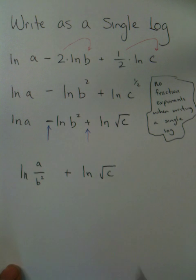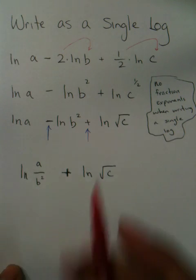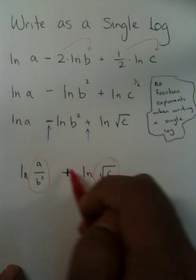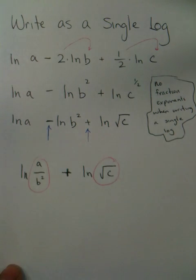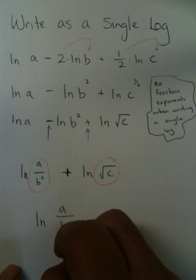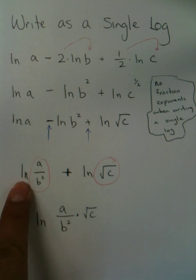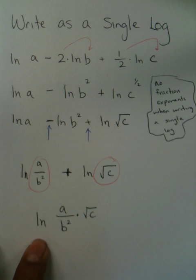Now, with this addition sign, addition means to multiply this and this together. So what we're really doing is we're taking the natural log. We have a, b squared, and that's going to be multiplied by radical c. Again, notice how the log turns only into one log after we apply this property.